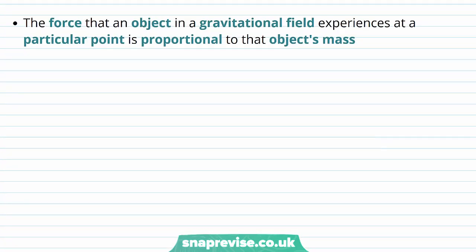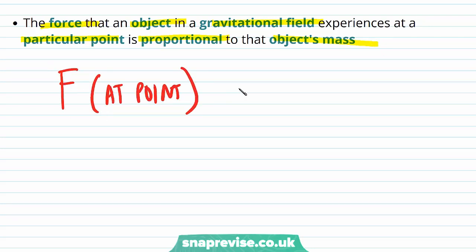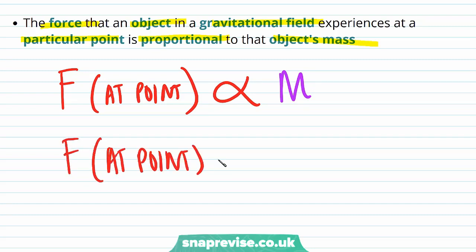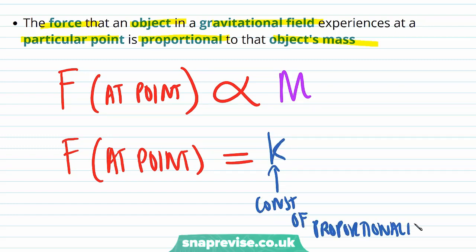The force that an object in a gravitational field experiences at a particular point is proportional to that object's mass. The force F at a certain point is proportional to the mass of the object. We can also say that the force at a point is equal to a constant of proportionality k times the mass of the object.